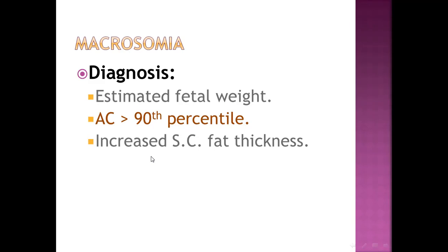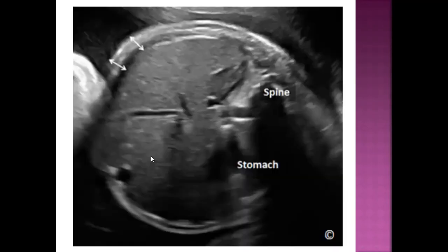Another diagnostic sign is increased subcutaneous fat thickness on the abdominal circumference diagram. Normally, subcutaneous fat is not observable in this way, but when increased thickness is seen, there is no specific cutoff level — we should still suspect macrosomia.